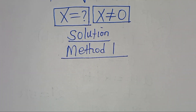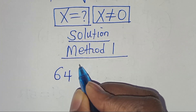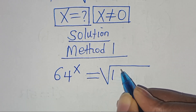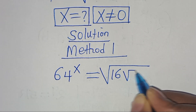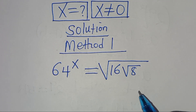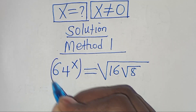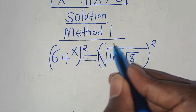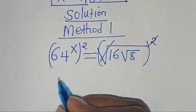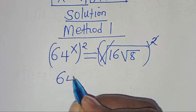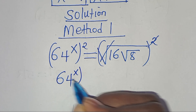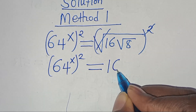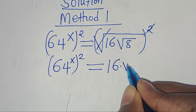In this case, we have 64 raised to the power of x, this is equal to square root of 16, then square root of 8. The first thing is to square both sides so that we eliminate the first square root sign. So here we have 64 raised to the power of x, raised to the power of 2, this is equal to 16 multiplied by square root of 8.